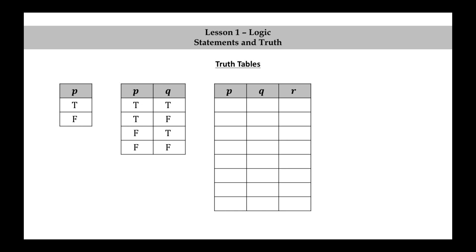Let's look at what happens with three propositional variables. An easy way to fill out the truth assignments is to start with the first column — make half of the rows true and the other half false. For the second column, alternate between two trues and two falses. For the third column, alternate one true and one false: T, F, T, F, T, F, T, F.